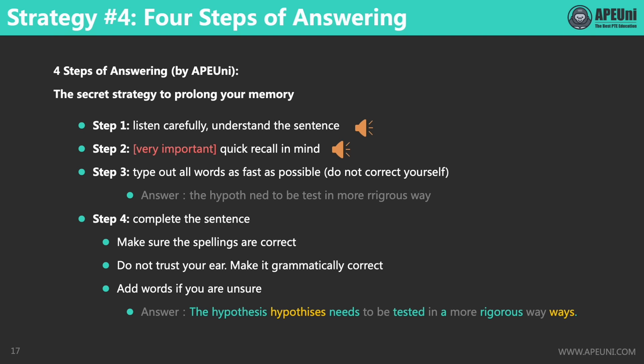For example, you can see from the answer typed out in this step — I made a lot of spelling mistakes, like with the words 'hypothesis' and 'need'. But I didn't stop to correct them, because once I stop to check or correct, I may forget the rest of the content. And in the last step, we need to complete the sentence — now it's the time to correct our spellings. First, capitalize the first letter T of the first word 'THE'. Some may ask what if I'm not sure if there is another word before 'THE' — our suggestion is to always capitalize the first letter of a sentence. Then complete the spellings for 'hypothesis', 'needs', and 'rigorous'. Don't forget a full stop at the end.